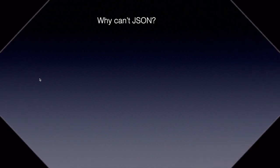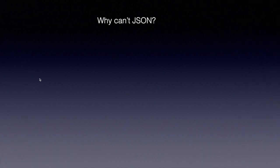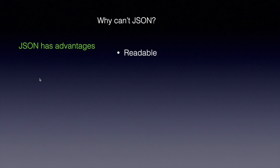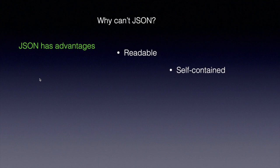You may ask: why can't we use JSON? JSON is very powerful and it has a couple of features. First, JSON is a readable document — it's a text message, so you can open it in any text editor and examine it. Secondly, it's self-contained: everything the consumer needs can be embedded into the JSON object and you can start sending and accepting it without any synchronization. Thirdly, it's extensible — you can easily extend the data stored in the JSON object without any harm to clients.